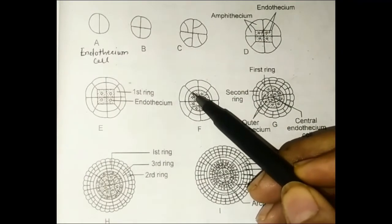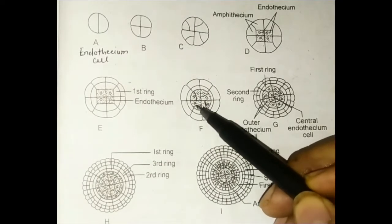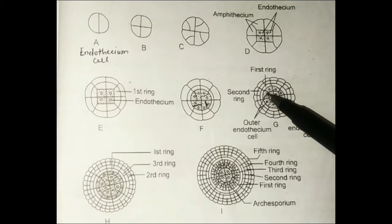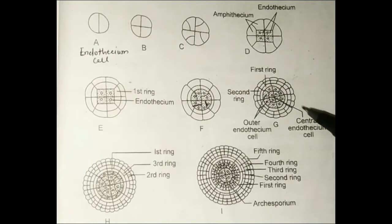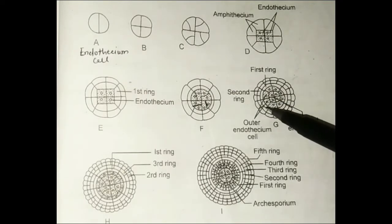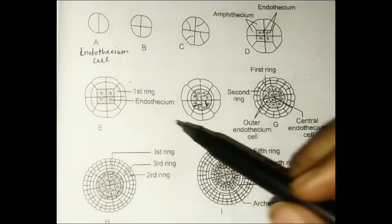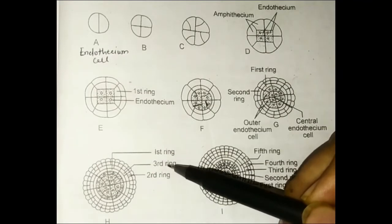After the first ring is cut, there are oblique divisions. After these oblique divisions, the second ring is formed. The second ring includes outer endothesium cells, central endothesium cells, and inner endothesium cells. The formation continues as a primary division producing the first ring, second ring, third ring in sequence.